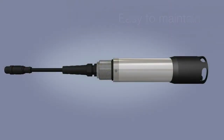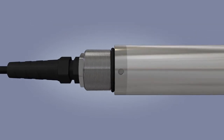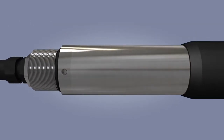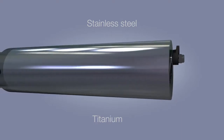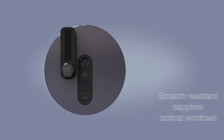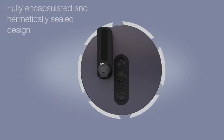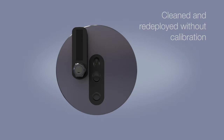The ATS-430 sensor incorporates a range of features aimed at minimizing maintenance throughout its operational life. The robust sensor probe is available in polished stainless steel or titanium and features scratch-resistant sapphire optical windows to withstand the harshest environments and pressures. The sensor requires no servicing throughout its life, thanks to its fully encapsulated and hermetically sealed design. When cleaning is necessary, it can be cleaned and redeployed without calibration.